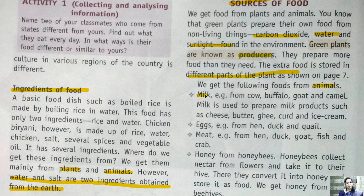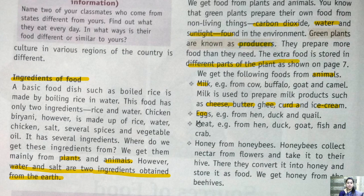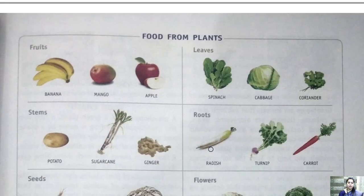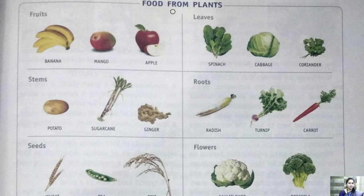Now, how are animals a source of food? For example, milk — we get it from buffalo or cow, so the source is animal. From milk we also prepare cheese, butter, ghee, curd, and ice cream. Eggs come from animals, meat comes from animals, fish is itself an animal, and honey we get from honeybees, which are also animals. So the two basic sources of food are plants and animals.